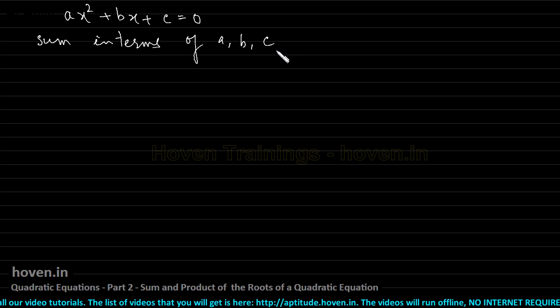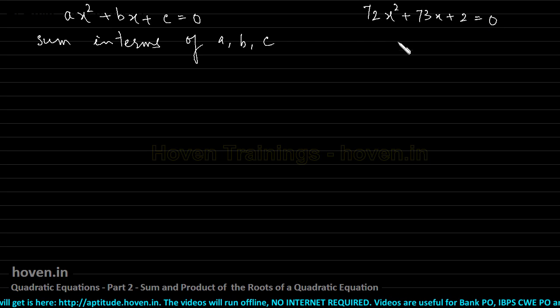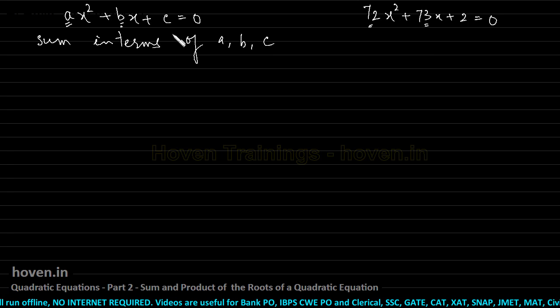And if I am given a complicated question like this 72x square plus 73x plus 2 equal to 0. If I am given a complicated question like this, then I will be able to match this a with 72, b will be matched with 73, c will be matched with 2. Then I will be matching a, b and c and then I will put these values into that formula directly.